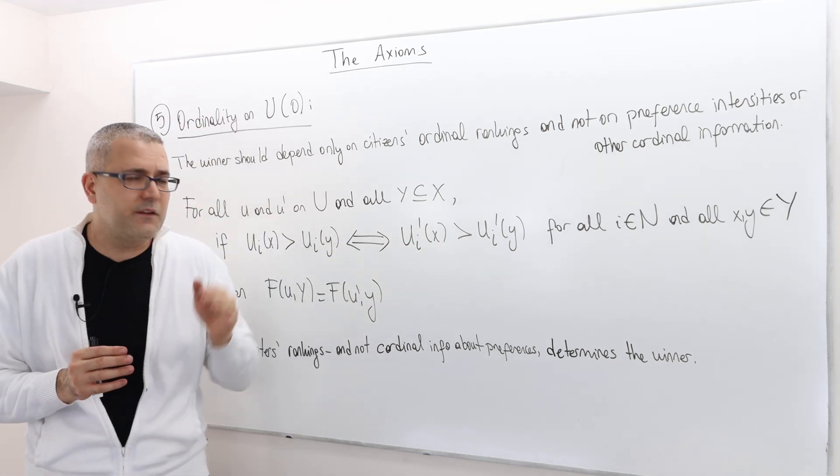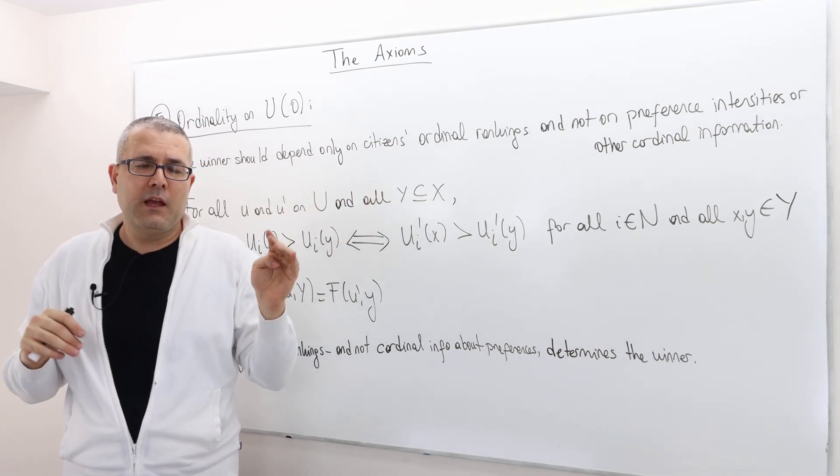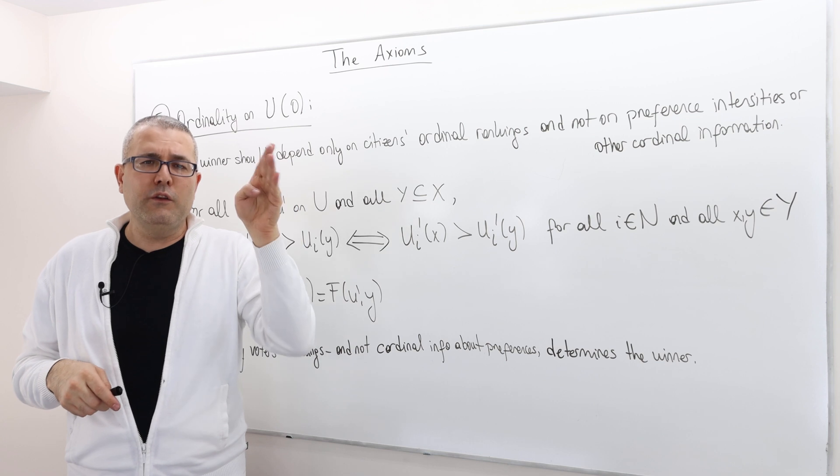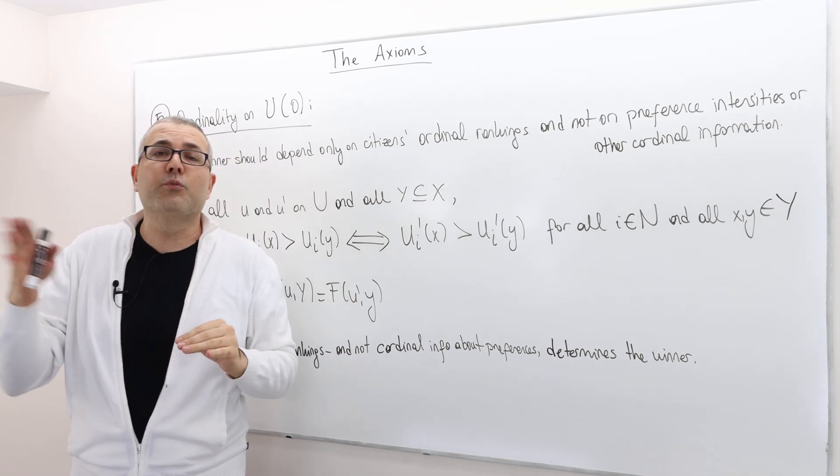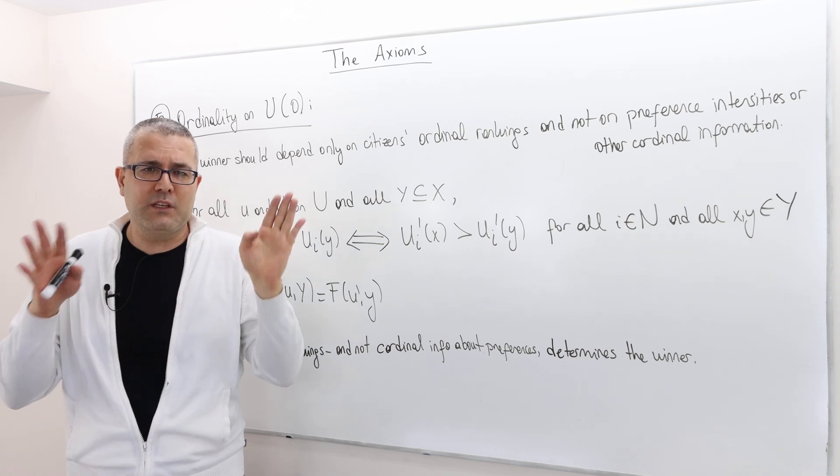So what does that mean? That means I have two preference profiles U and U prime. Remember U is U1, U2, all the way up to UN. U prime is the same, U1 prime, U2 prime, all the way up to UN prime. So these are vectors.